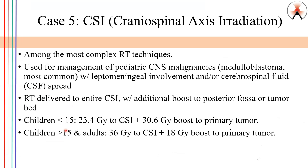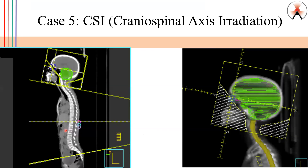It is one of the most complex radiation therapy techniques because we have to match three totally different fields. There are limitations to the machine — the maximum field size that we can treat with a LINAC or with a proton therapy unit has a limit. With a LINAC it's 40 cm. But if you look at these images, the distance from here all the way to the inferior of the third field is a lot more than 40 cm. So we have to break these down into three separate fields. Notice how these beams diverge — they're not straightforward.